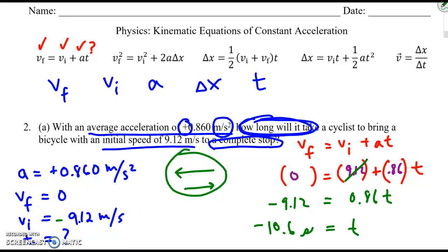Okay. So now I know I need to go back and fix my original work because this should have been a negative. In reality, I should have been adding 9.12. So my time comes out positive.